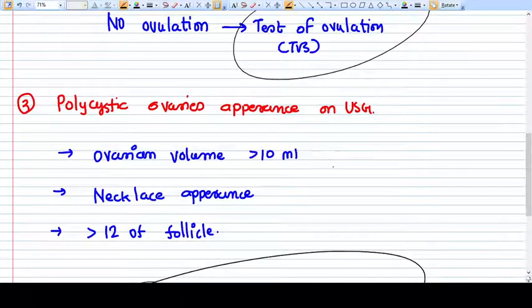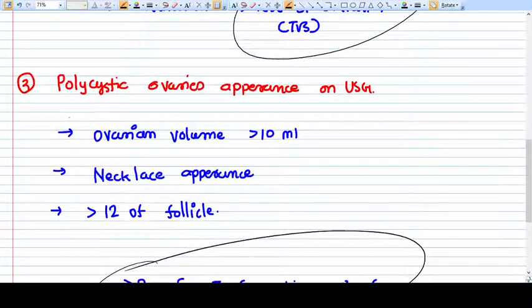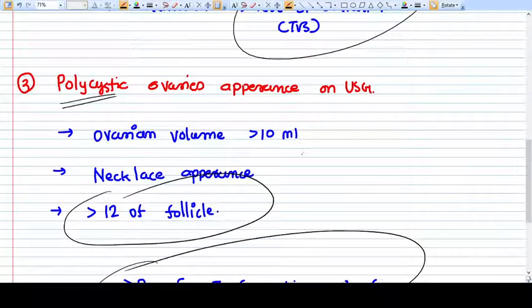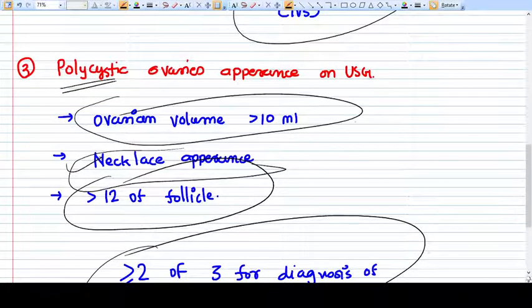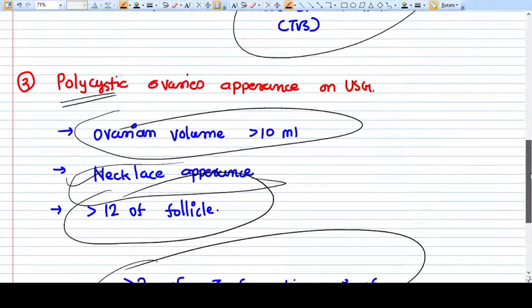Polycystic ovarian appearance on USG or sonography is defined as more than total 12 follicles in both of the ovaries on the early follicular phase. A necklace appearance is more specific for PCOD. Ovarian volume more than 10 ml combined of both ovaries can be taken as a positive criteria on the sonography.